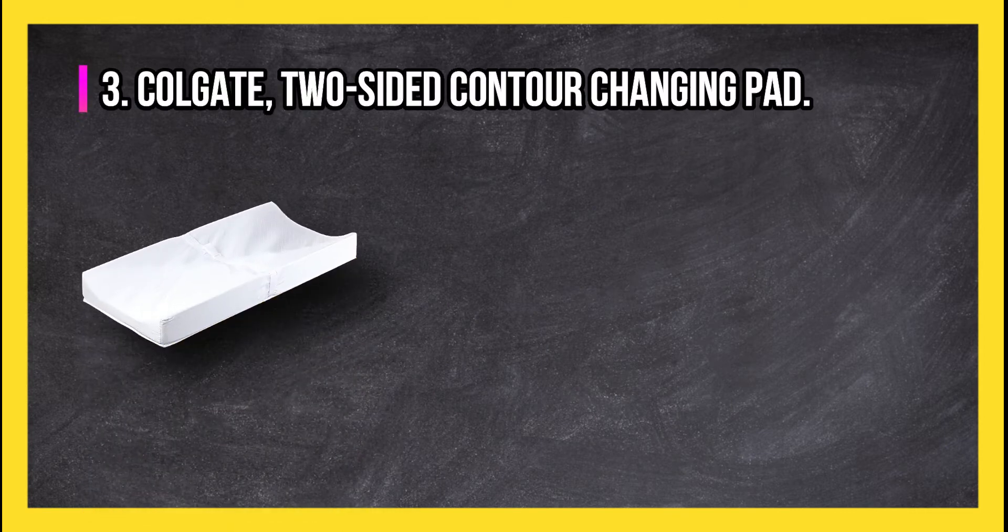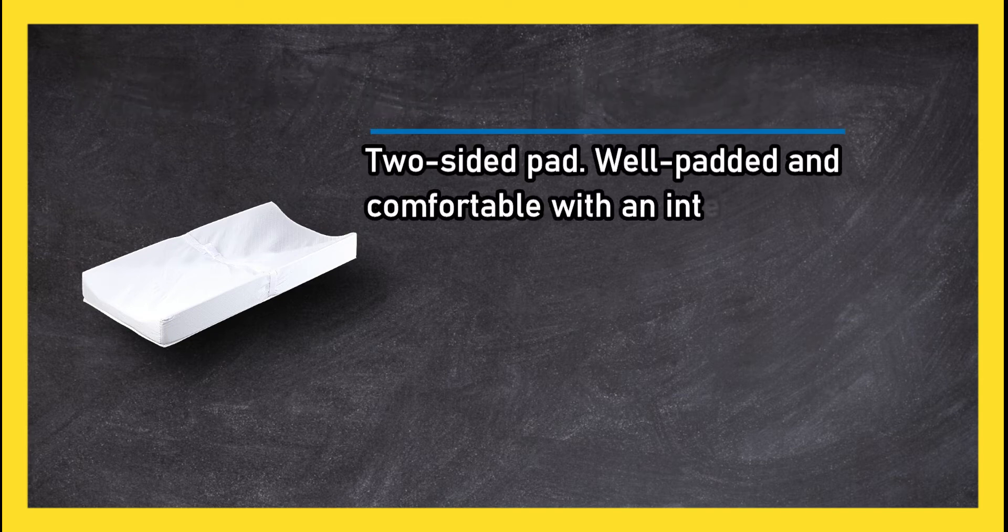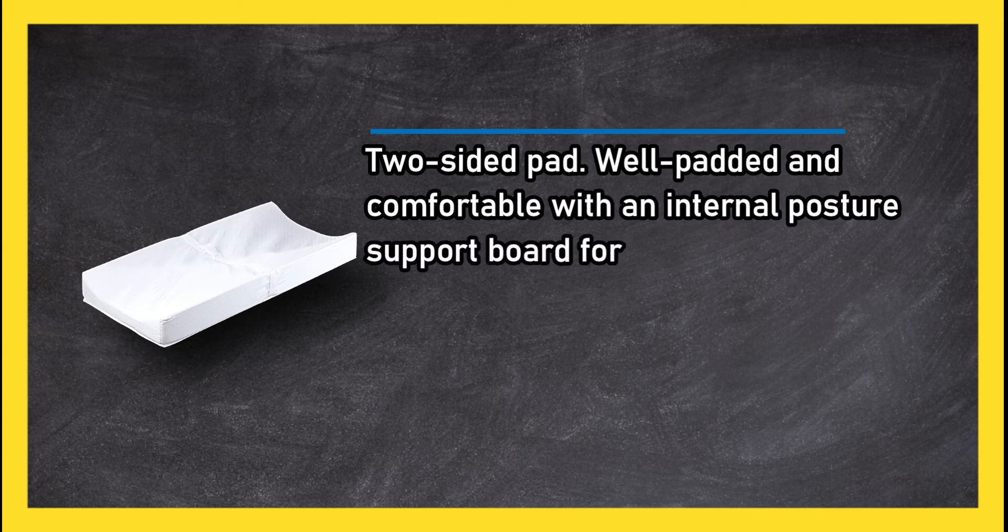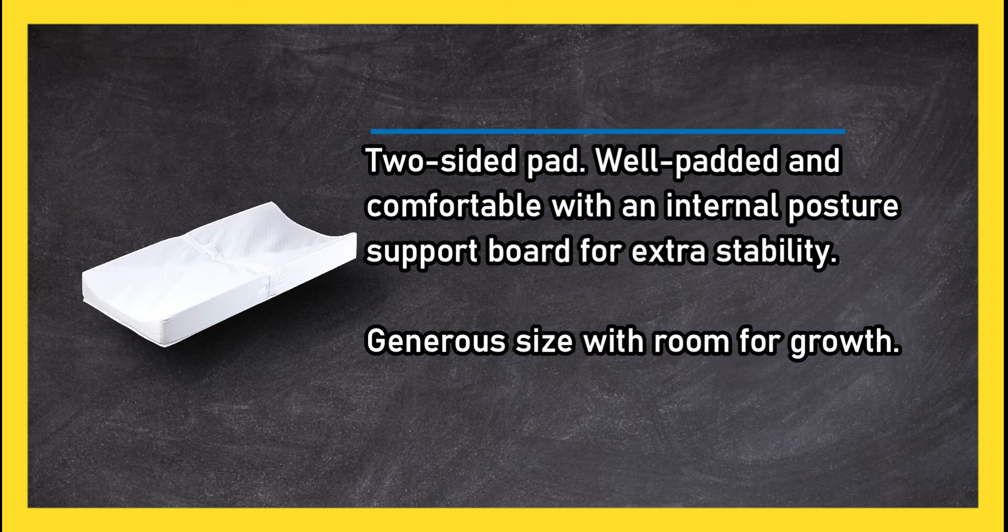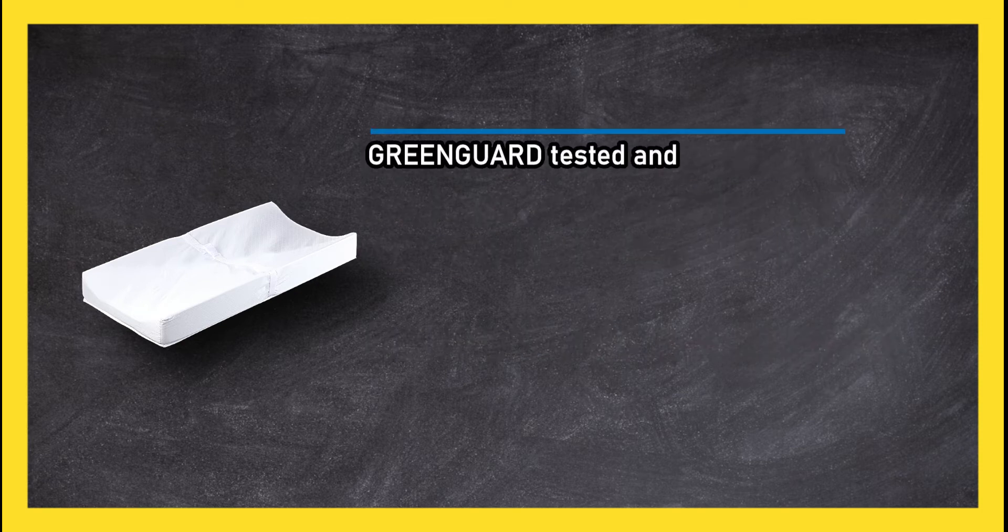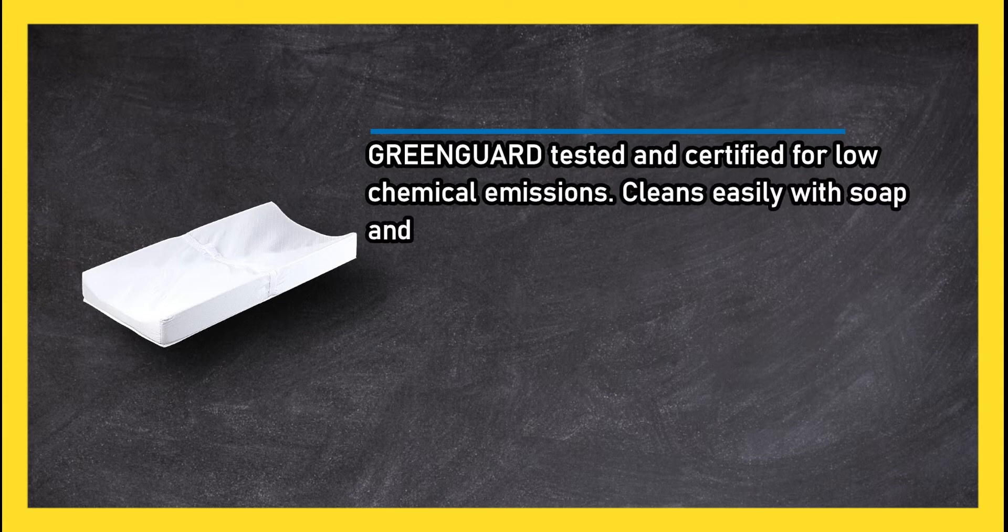Colgate two-sided contour changing pad. Two-sided pad, well-padded and comfortable with an internal posture support board for extra stability. Generous size with room for growth. Green Guard tested and certified for low chemical emissions. Cleans easily with soap and water.